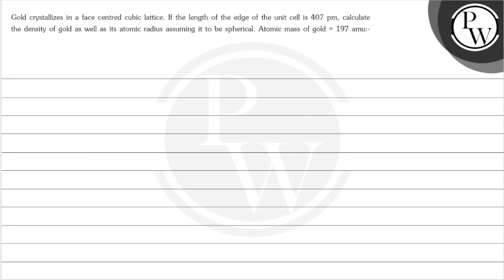Hello, let's see the question. So the question says, gold crystallizes in a face-centered cubic lattice. If the length of the edge of the unit cell is 407 picometers, calculate the density of gold as well as its atomic radius, assuming it to be spherical. It is given that the atomic mass of gold is 197.